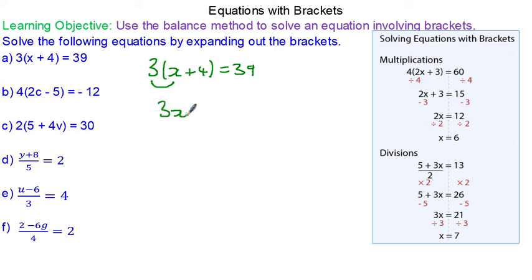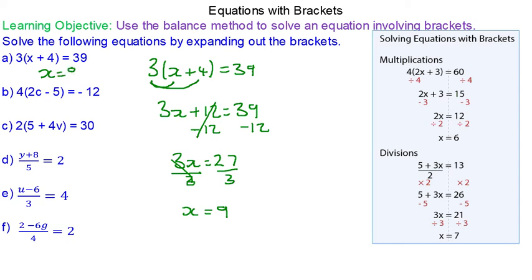So we have 3x plus 12 equals 39 and we take away the 12 on both sides. The 12s cancel. So 3x equals 27 and divide both by 3 because that's the opposite of times 3. And we're left with x equals 9.